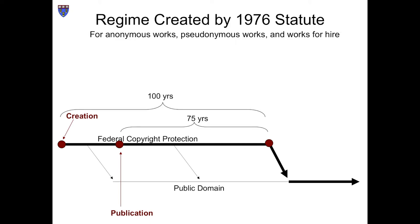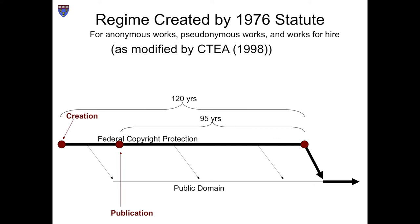Measuring duration by the life of the author would not work for anonymous works, pseudonymous works, and works for hire. So these were given terms of years meant to approximate the duration of regular copyrights — a century from the date of creation or 75 years from first publication, whichever happened first. The Copyright Term Extension Act in 1998 also extended those terms by 20 years.